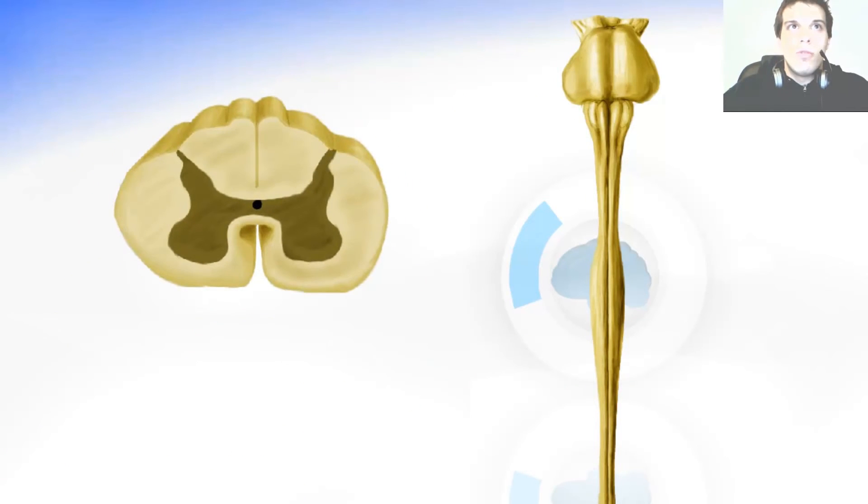Now the thoracic segments look more like this. They are smaller. The gray matter will also have one more horn and it is the lateral horn. It is going to look like this, so this over here is the difference, the lateral horn.